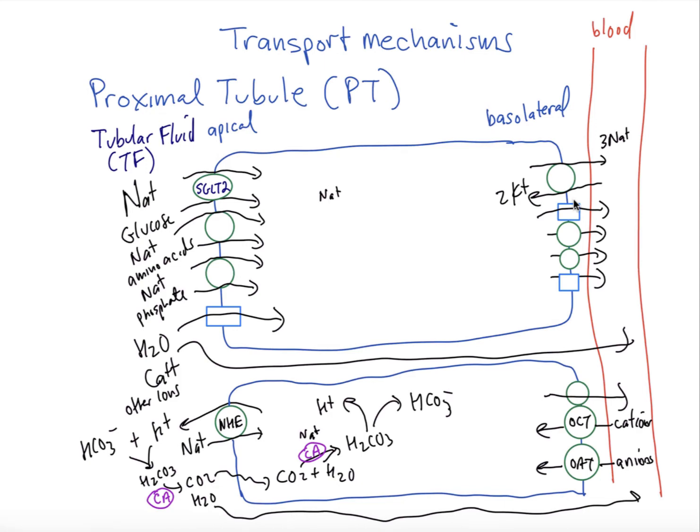We also have some secretory transport mechanisms illustrated here on the basolateral side. We have organic cation transporters that transport cations. This could be drugs. It could be creatinine. Also we have organic anion transporters that transports anions such as paraminohippuric acid or PAH and also anionic drugs, and then these can eventually get secreted into the tubular fluid and then excreted in the urine.